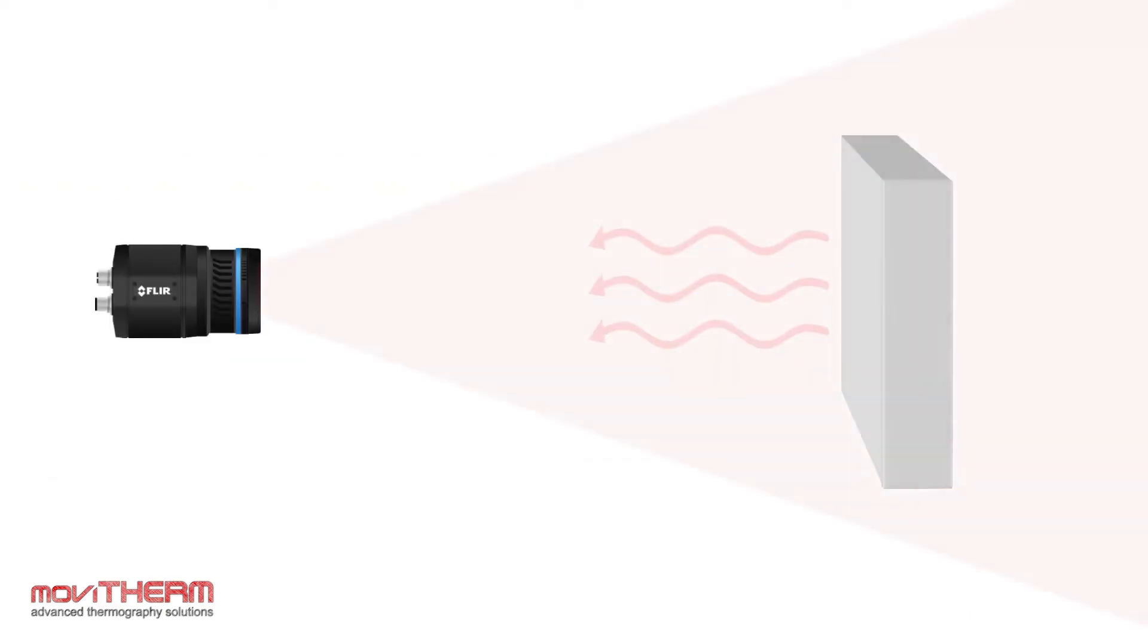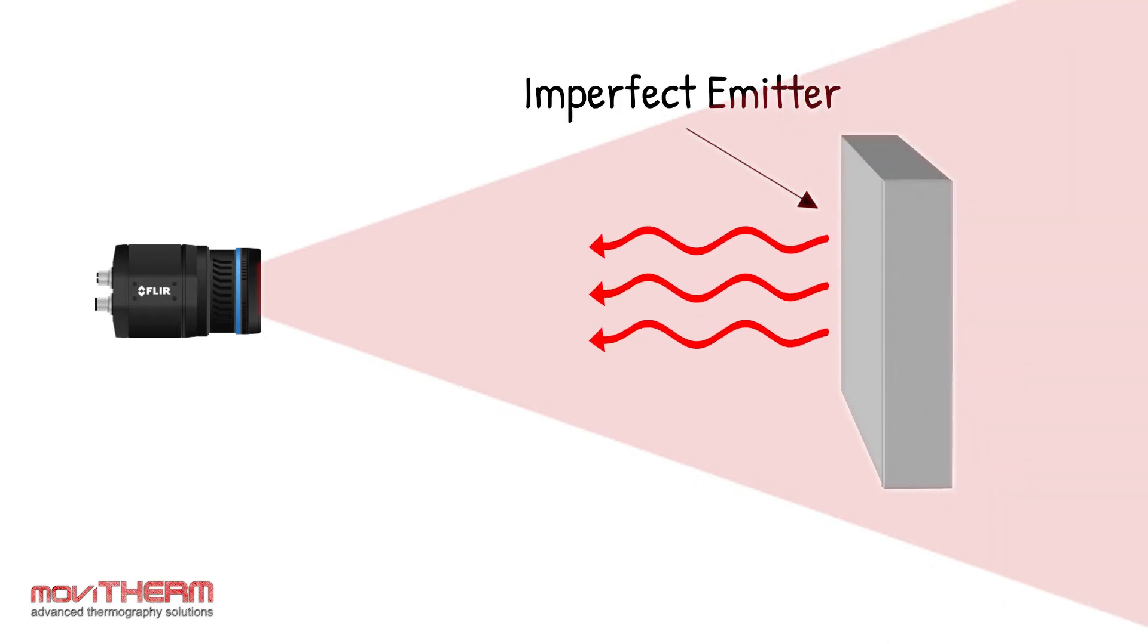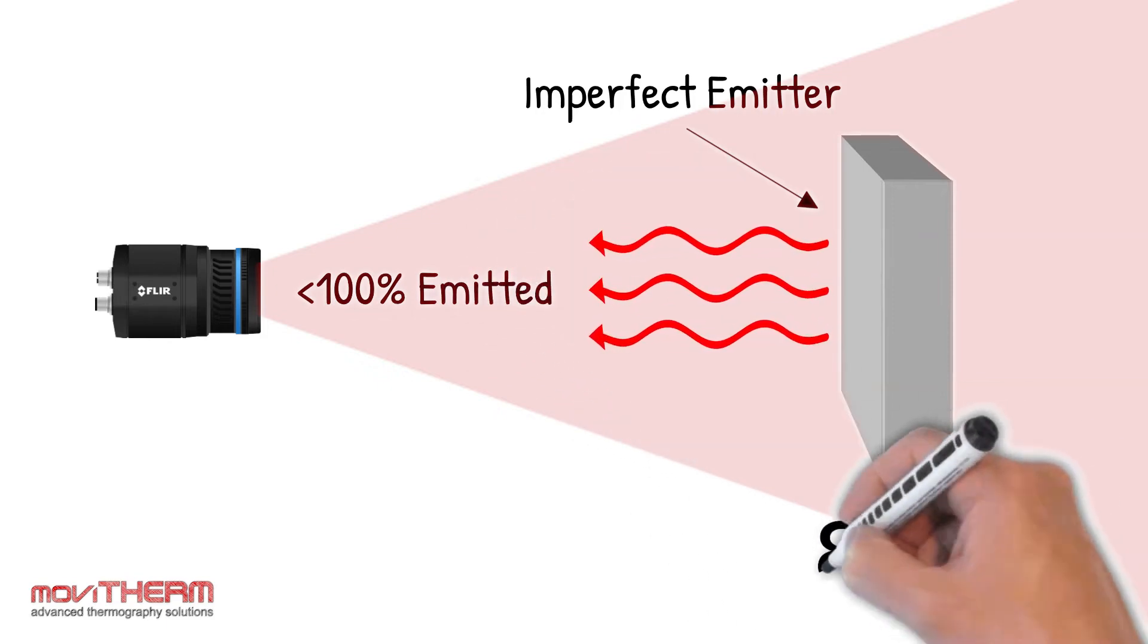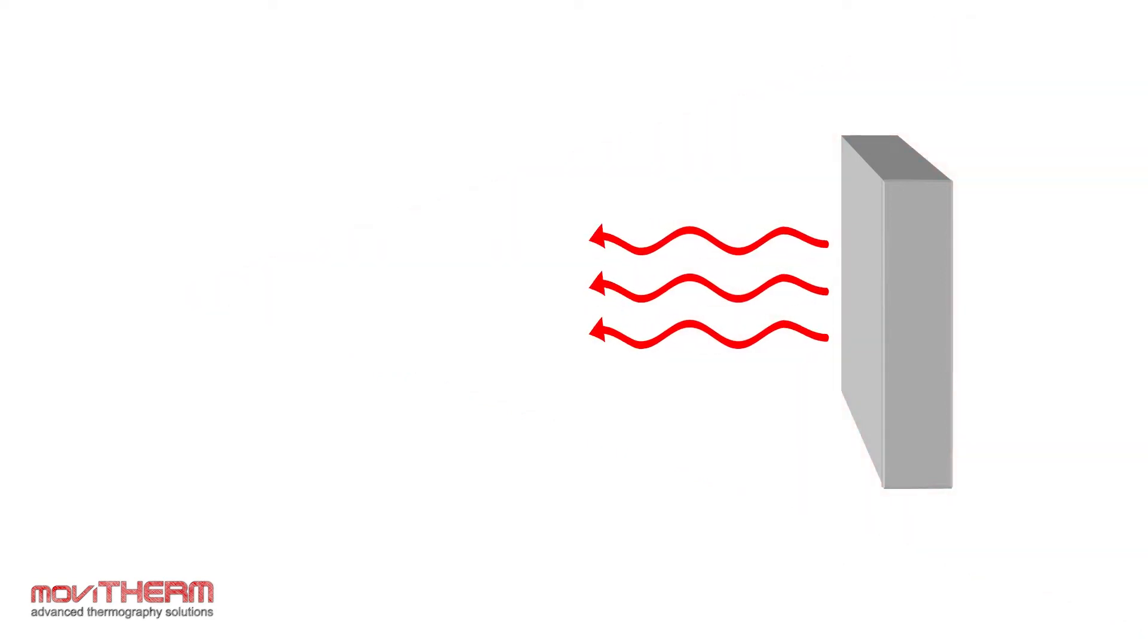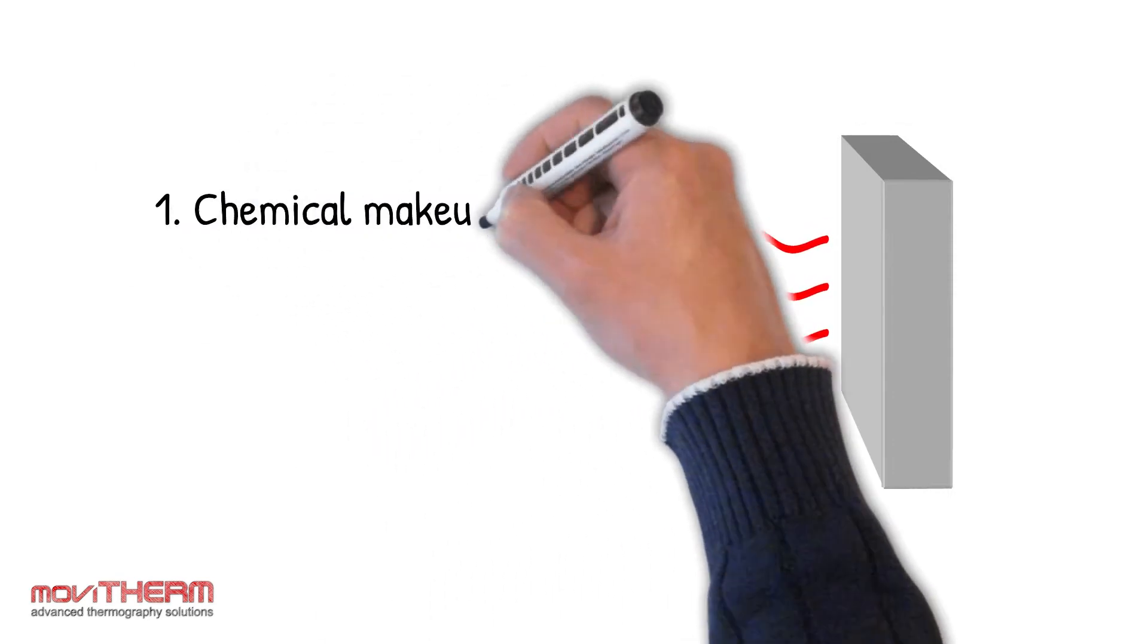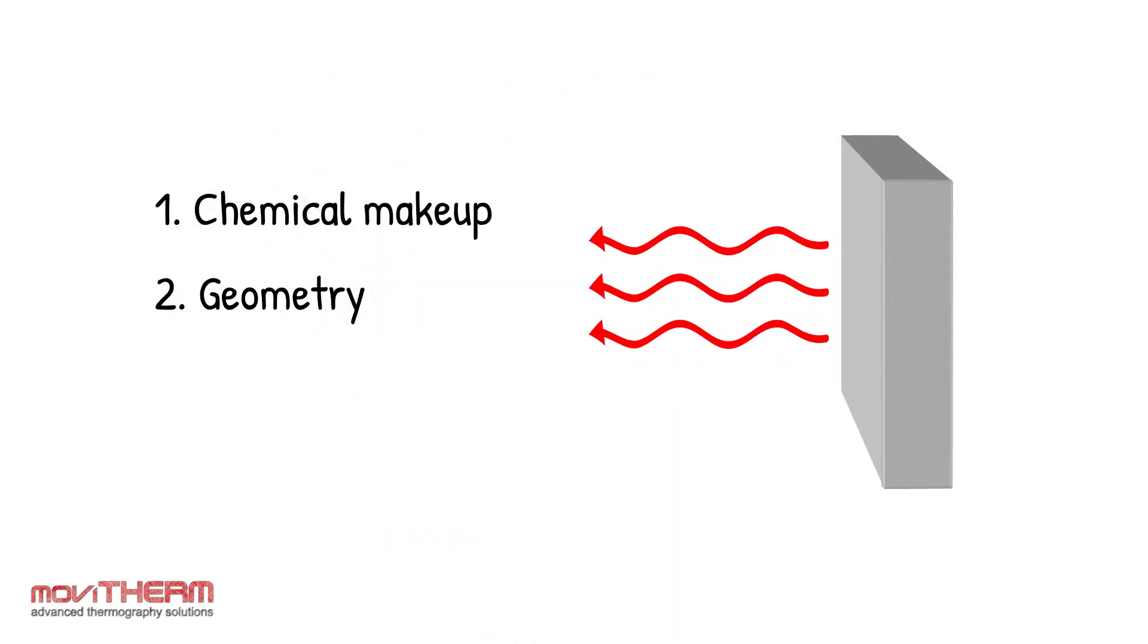In reality, there are no perfect blackbodies, with all objects emitting infrared radiation at less than 100% and having emissivity values of less than 1. The emissivity varies from object to object and depends upon chemical makeup, geometry, and temperature.